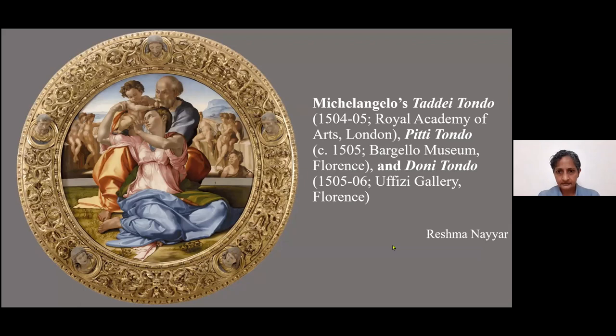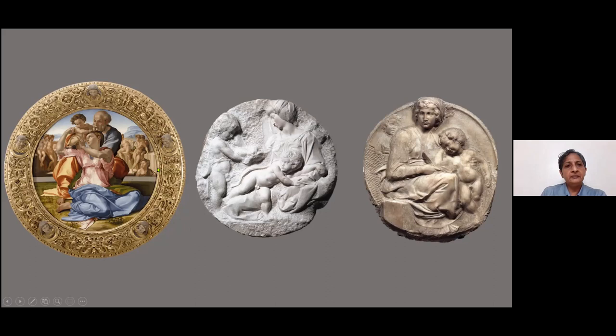This is just an overview of the three works we'll be looking at. As I mentioned, the one on the left is painted, the other two are relief sculptures. The primary figures in all of them are the Virgin and the Christ child. So in the first one, you have St. Joseph, the Virgin Mary, and the Christ child, as well as a lot of figures in the background, which I will talk about. In the other two sculpted tondi, you have the Virgin and child with the infant St. John the Baptist.